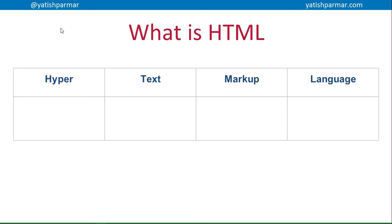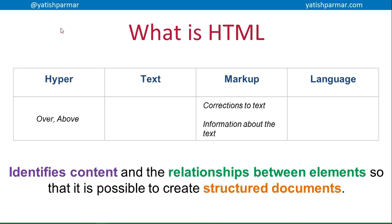So first of all, what actually is HTML? HTML stands for hypertext markup language. Hyper basically means over or above. Markup is a historical term — when a book would be getting ready to go for print, the author and editor would make corrections to the text before the final print, so it was information about the text. So HTML basically is a language that identifies content and the relationship between elements, so it's possible to create structured documents. The hypertext refers to the fact that the text within an HTML document can have functions over and above ordinary text, i.e. the text can be links. And markup refers to the fact that the HTML language provides information about the content — it's information about the information in a page.